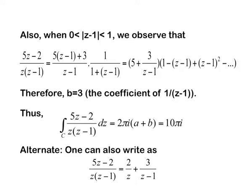Alternatively, we can directly use partial fractions and write the function as 2/z plus 3/(z minus 1). Clearly the coefficient of 1/z is 2 and the coefficient of 1/(z minus 1) is 3, and therefore these two are respectively the values of the residues.